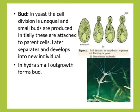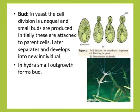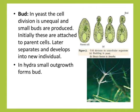The next one is budding. In yeast cells, the division is unequal. The small one is a bud produced exogenously and separated to give rise to a new individual. This also happens in the case of hydra. This is budding.